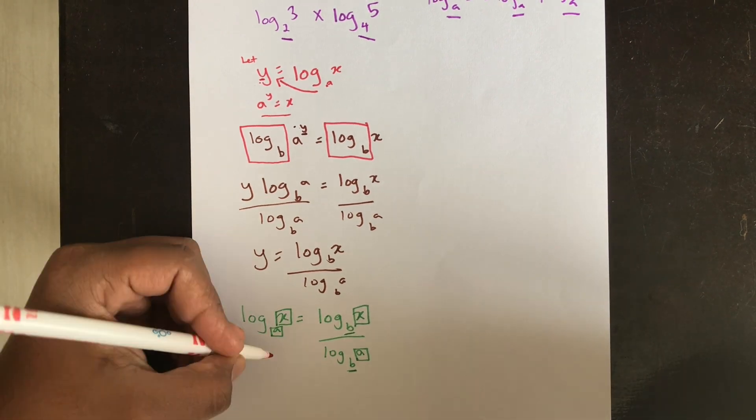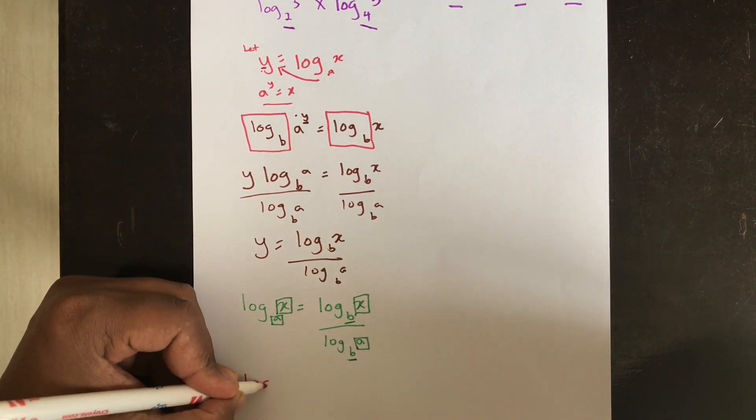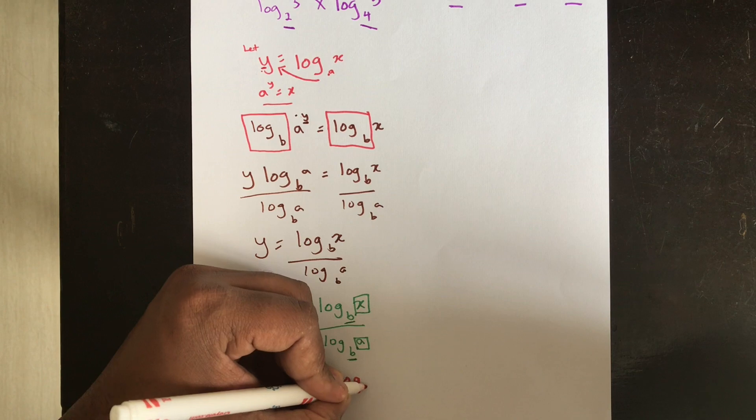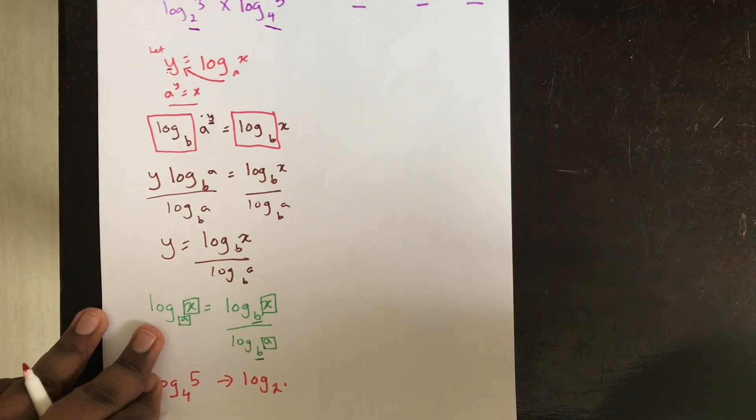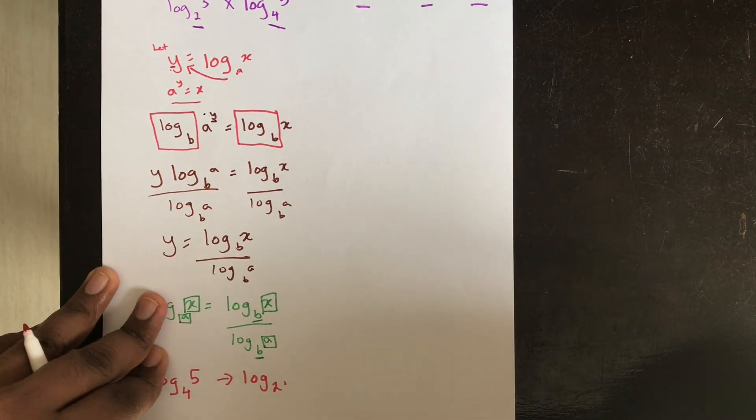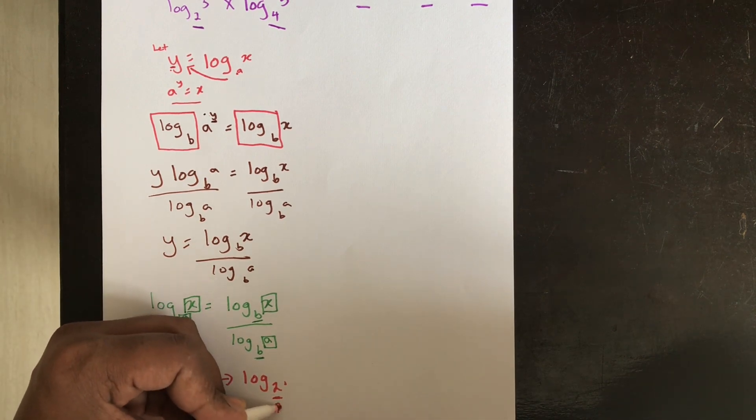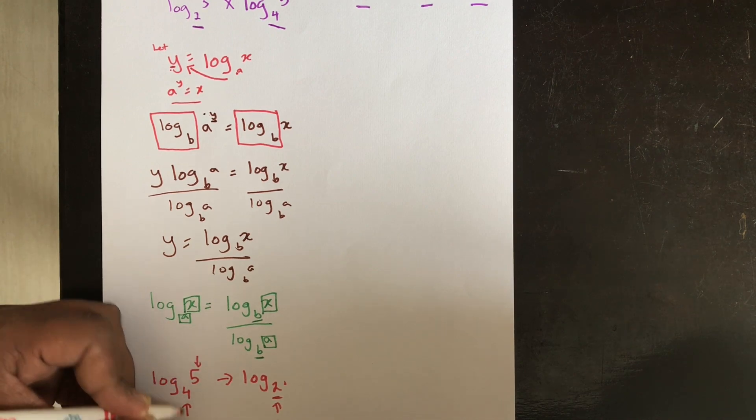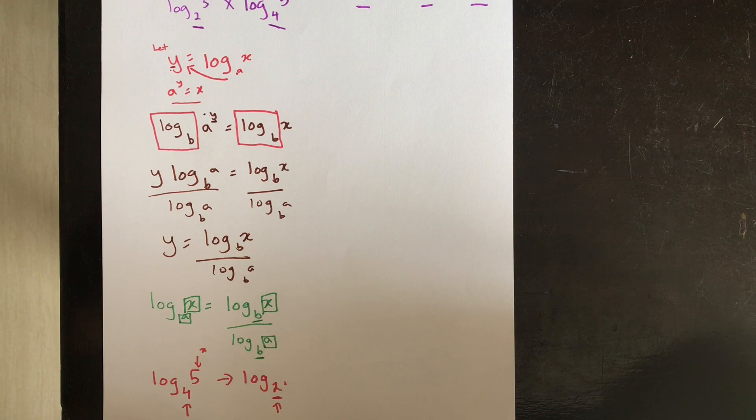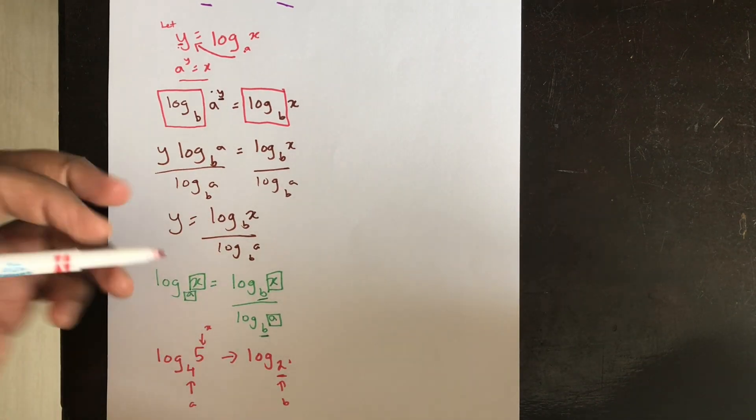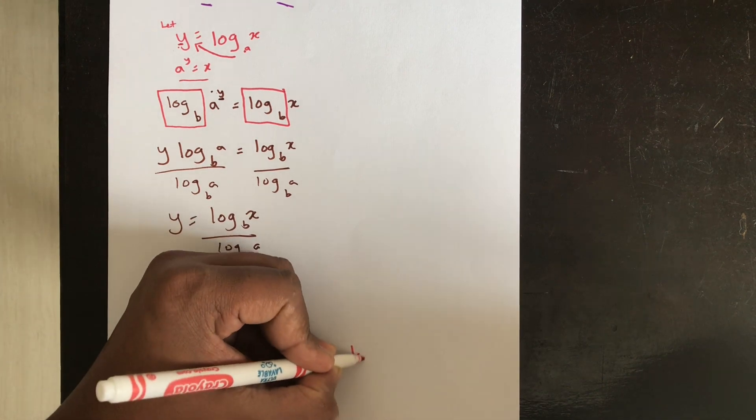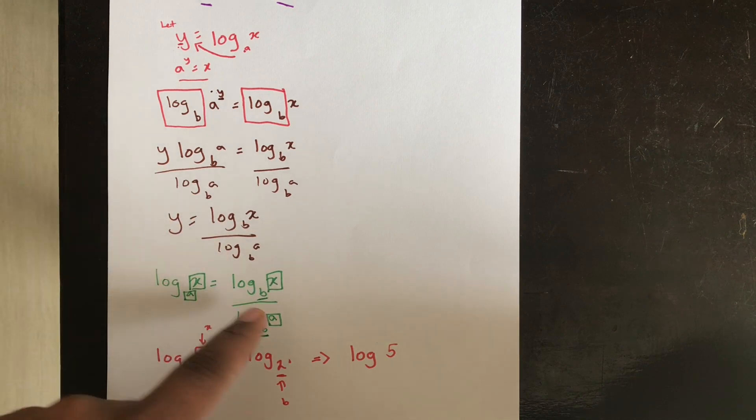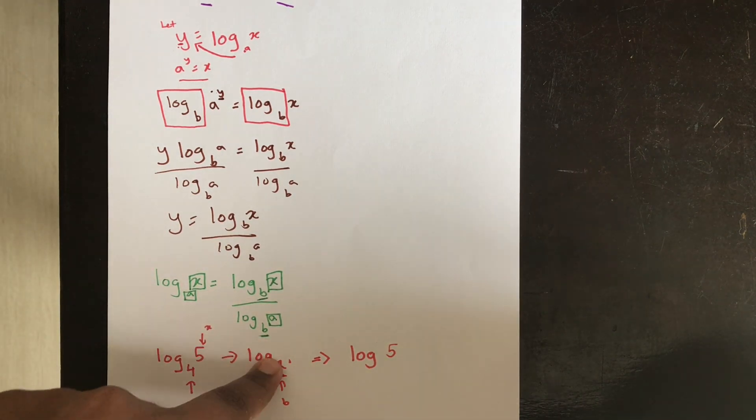Something like log 5 base 4. I want to make this into logs of base 2. How will I do this? So my b becomes 2, my a is 4 and my x is 5.